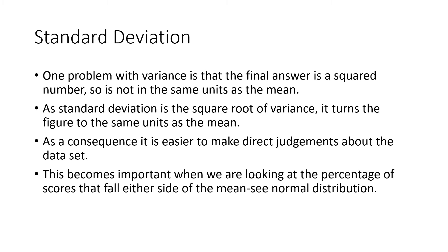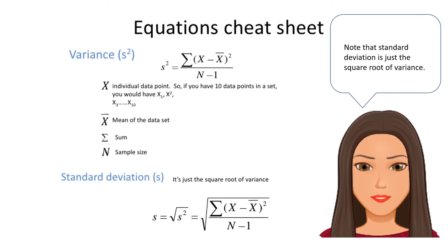This becomes important when looking at the percentage of scores that fall either side of the mean — for example, when looking at normal distribution. Here is an equations cheat sheet: standard deviation is simply the square root of variance.